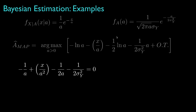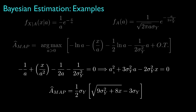To solve for the MAP estimator, we differentiate the cost function with respect to parameter a and set that derivative equal to zero. After some algebraic manipulation, this gives us a quadratic equation to solve for a. Because the parameter a and the observation x are non-negative, we select the non-negative root from the quadratic equation to get the MAP estimator.